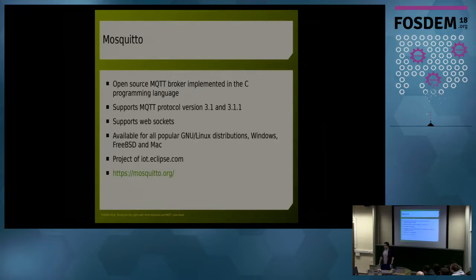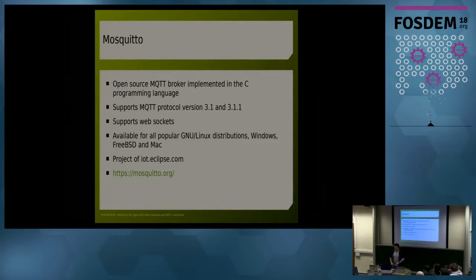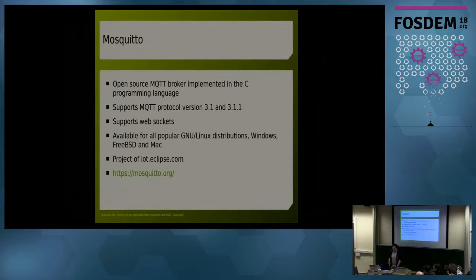My preferred choice for MQTT broker is Mosquitto — I really love it. It's very simple. It supports MQTT protocol version 3.1 and 3.1.1, including WebSocket support, which means you can directly publish messages from JavaScript in your web browser to the MQTT broker. It's available for Linux and on popular Linux distributions there are packages. On Raspbian or Debian you can just type apt-get install mosquitto and it will be there. It's also available for Windows, FreeBSD, and Mac. It's a project of the Eclipse Foundation.